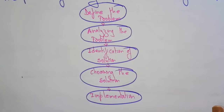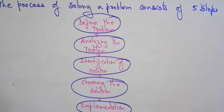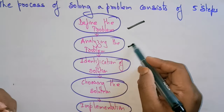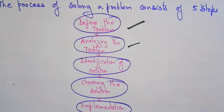The steps to follow when solving a problem are: first, define the problem — what are you trying to find using artificial intelligence? For example, creating a self-driving car, a chess game, or a Sudoku game. Next, analyze the problem — identify the different conditions that need to be addressed to solve it.